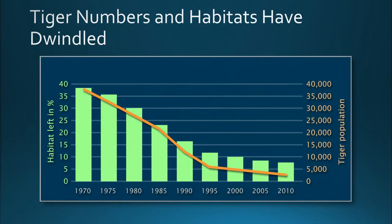Tigers are no stranger to diversity loss. As one of the most charismatic megafauna, they've been hit particularly hard with species losses in the last several hundred years. By 1970, tigers had a little less than 40% of their estimated historic habitat remaining and a little less than 40,000 individuals in the wild. By 2010, those numbers had dropped to less than 10% of their habitat and less than 5,000 individuals. But this is just looking at tigers as a whole — what about all the unique populations that make up the parts of tigers?